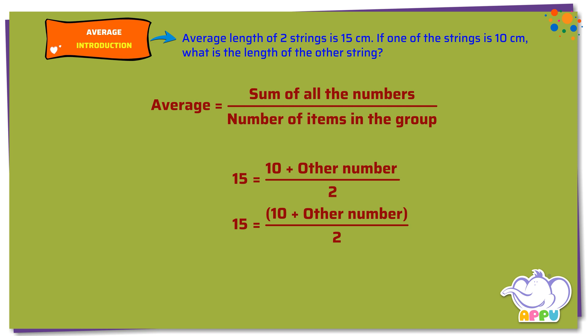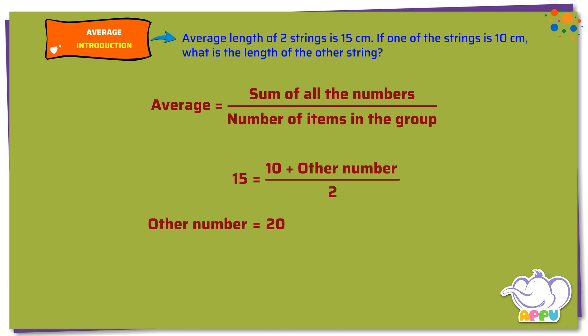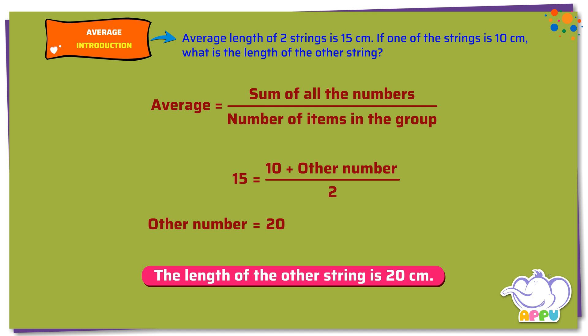Let's simplify this. First, multiply both sides by 2. We get 2 times 15 equals 10 plus other number, which is 30 equals 10 plus other number. Next, we subtract 10 from both sides. We get 30 minus 10 equals 10 plus other number minus 10. 20 equals other number. So the length of the other string is 20 centimeters.